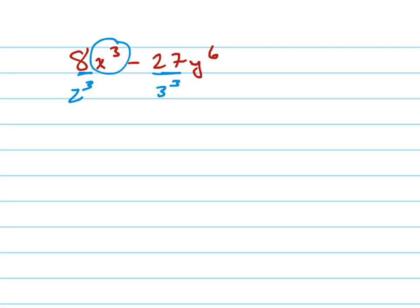Oh, and look, that's x cubed, and oh look, that's y squared cubed. So let's rewrite this as 2x quantity cubed minus 3y squared quantity cubed.